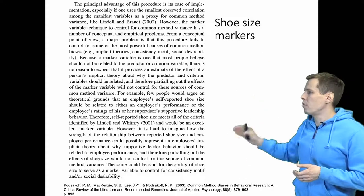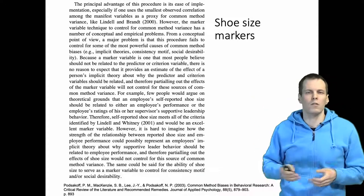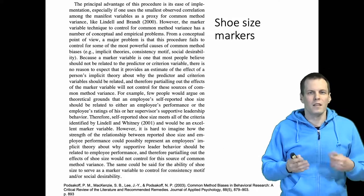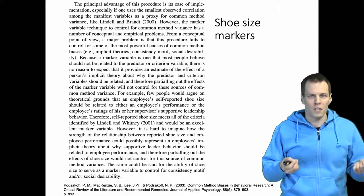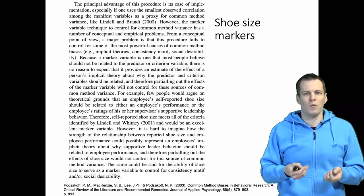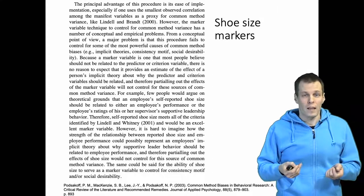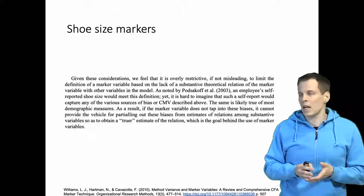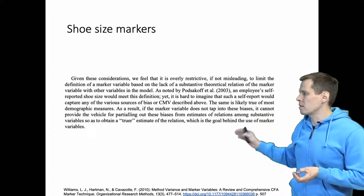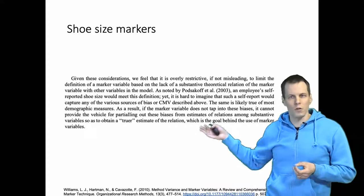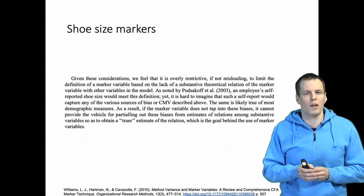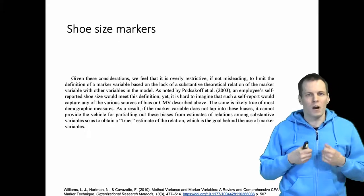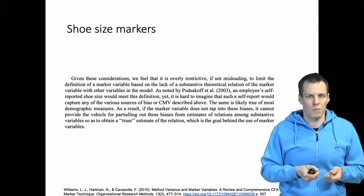These kinds of markers are referred to as shoe size marker variables in the literature. The term was coined by Podsikoff, Mackenzie, and co-authors, who explained that shoe size, height, and other factual or demographic variables probably don't work well as markers when you are measuring attitudes. The same is explained in an article by Williams and co-authors, who also use the term shoe size markers. It is critically important that your markers are affected by the same sources of bias.